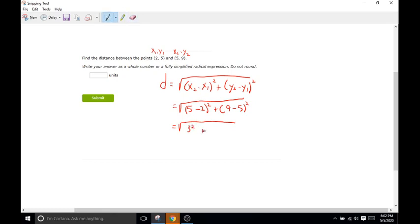3 squared plus 9 minus 5 is 4. So we have 4 squared. Let's simplify this a little bit more. 3 squared or 3 times 3 is 9. And then 4 squared or 4 times 4 is 16. So if we add both of those together, 9 plus 16 is 25.